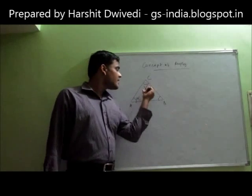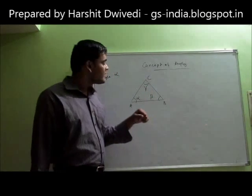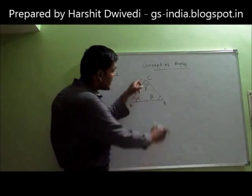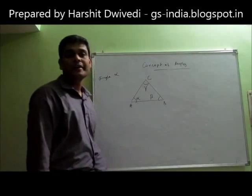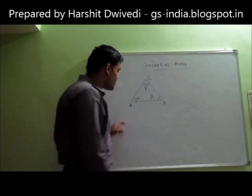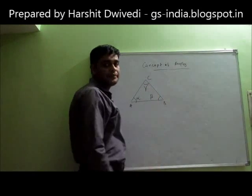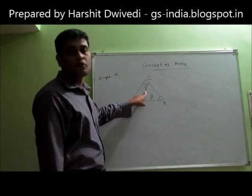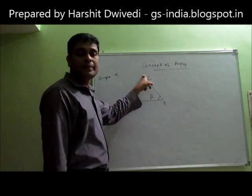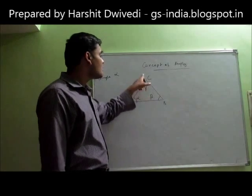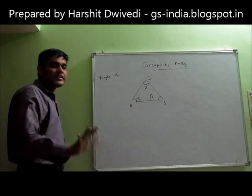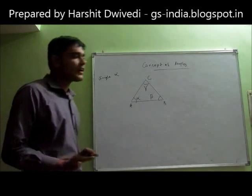By the same logic, angle beta is the orientation of line BC keeping AB as the standard line or the baseline. Or we can also say that angle beta is the orientation of line AB where I keep line BC as the baseline. Similarly, gamma is the orientation of line BC when I keep AC as the baseline, and also gamma is the orientation of line AC when I keep BC as the baseline. So this is the basic definition of angles.